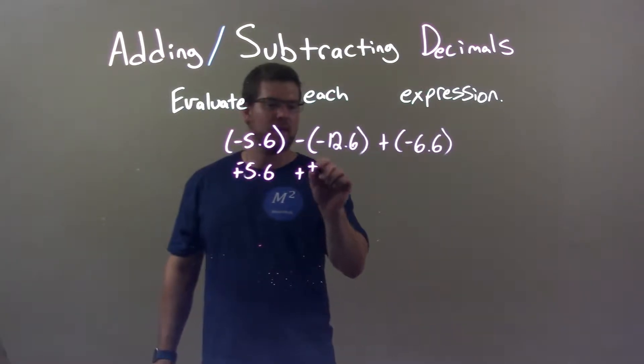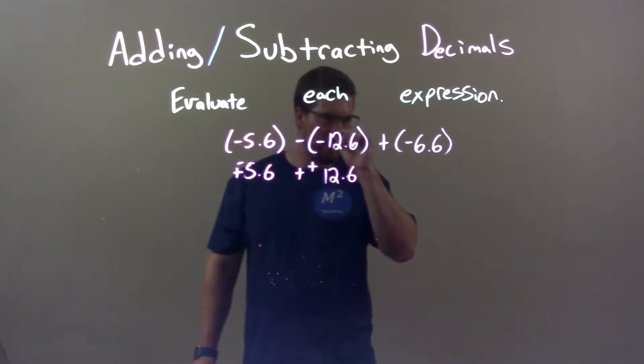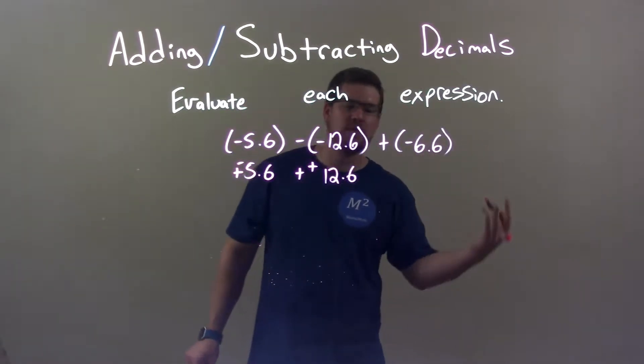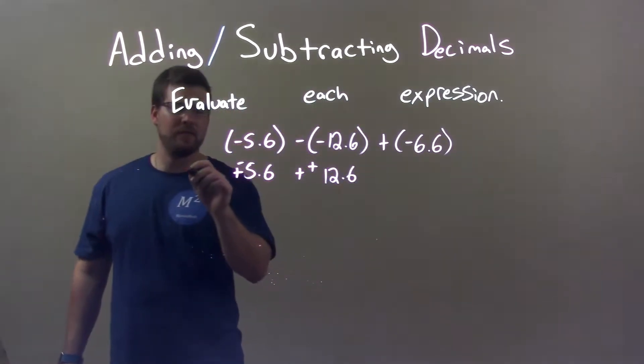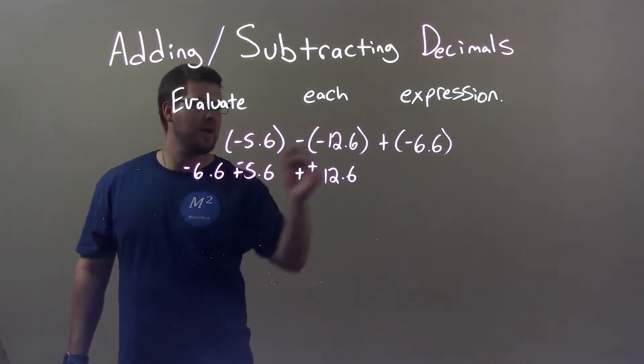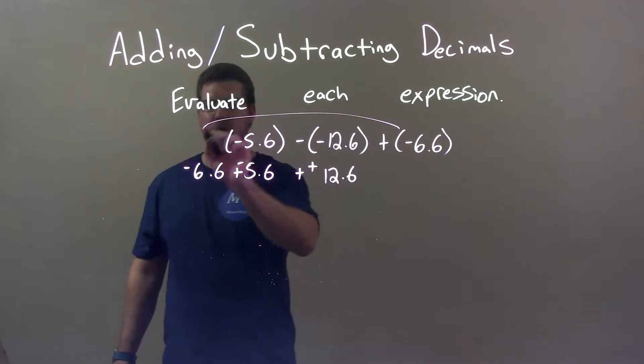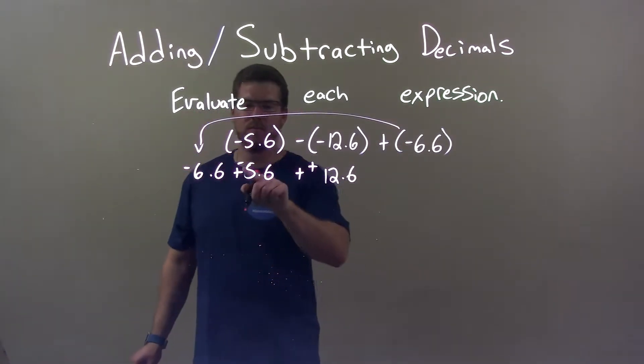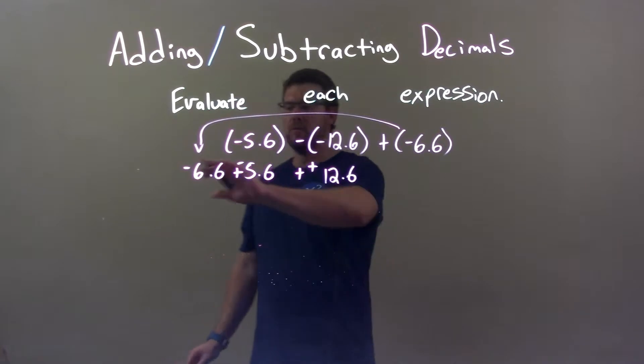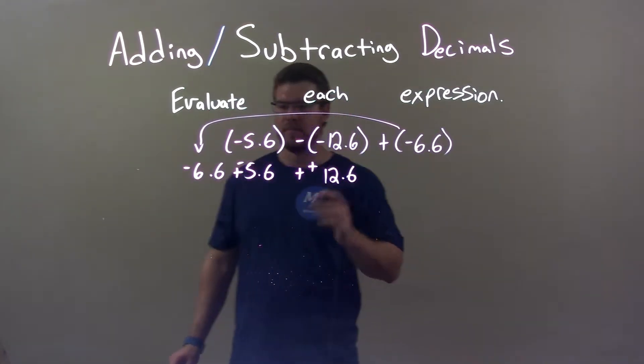Then, we have plus here plus a positive 12.6. Then, this adding a negative 6.6, I'm going to put it with this other negative. So negative 6.6, bringing it all the way around here. And that's just because I want to rearrange eventually the negatives together. So we have two negative numbers and a positive number, alright?